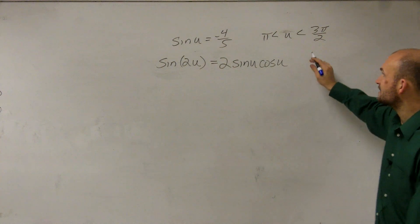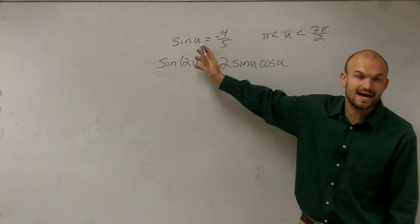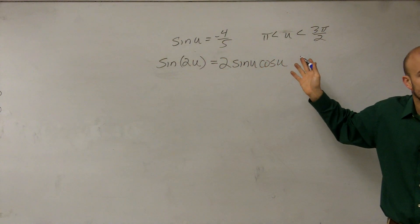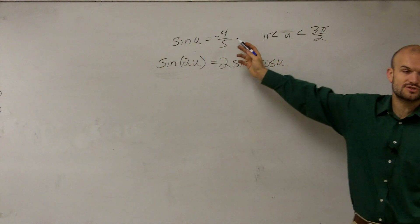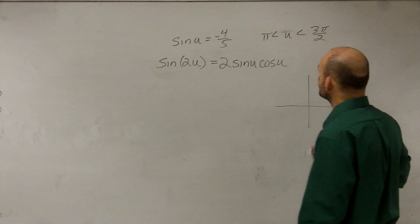All right. So now the next thing is we need to determine what exactly our cosine of u is. We know what the sine of u is, but we don't know what the cosine of u is. So we notice that this is not on the unit circle, so we need to create a triangle. But we need to make sure we create a triangle within our constraint.